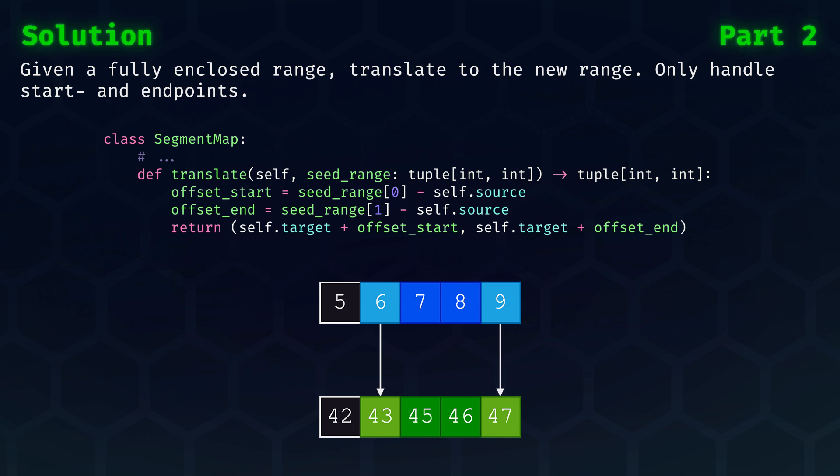The other critical function update is the Translate function. Assuming that we have a fully enclosed range, meaning that there is no overlap on the edges of the segment, then we simply have to provide back an updated range. Ranges like this always only require us to handle the end points of the range. We don't care about storing the numbers in between explicitly.